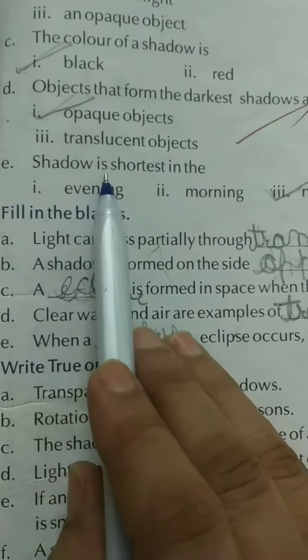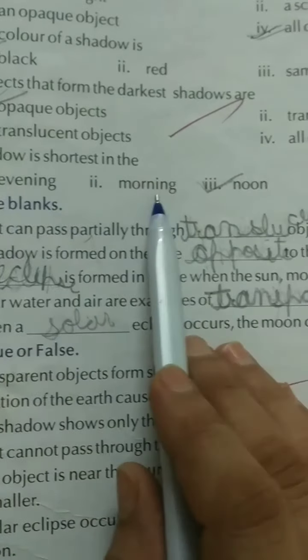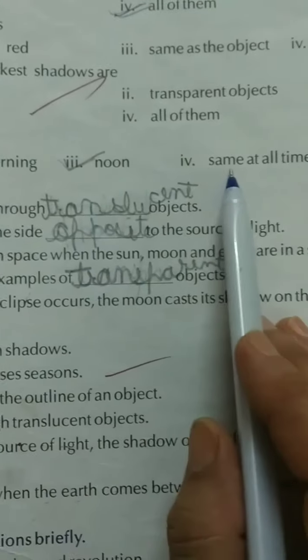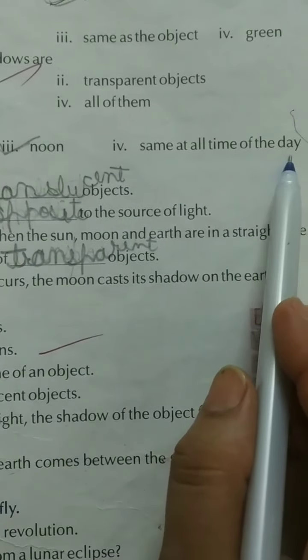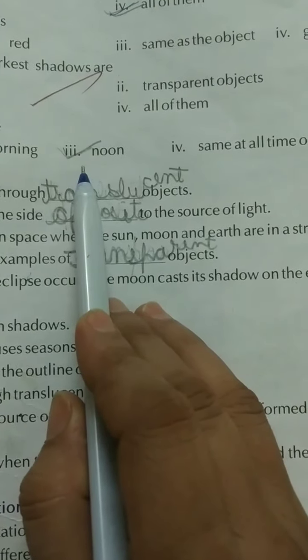We know opaque object block the way of light and cast shadow. Part E: Shadow is shortest in the evening, morning, noon, same at all time of the day. Correct answer is noon.